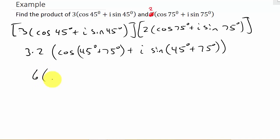And then that's the cosine of 45 plus 75, which is 120, plus i times the sine of 120. So this right here is multiplying them together, and this is having the answer in trigonometric form.